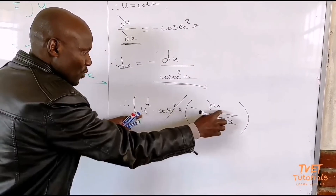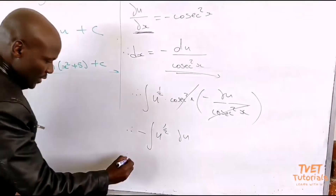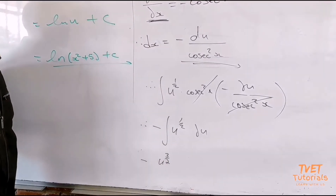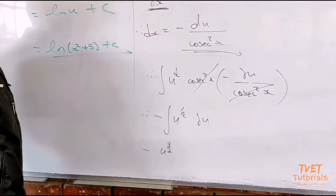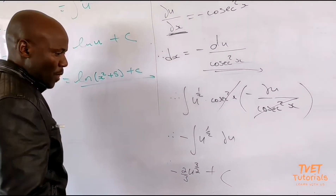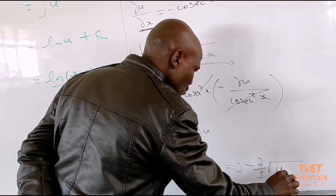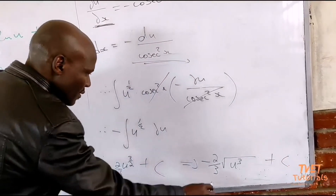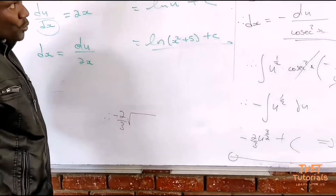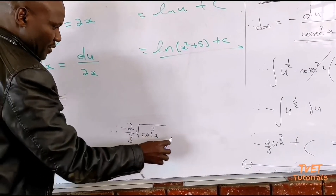Our expression is now simple — entirely in terms of u. Factor out the negative: it's negative ∫u^(1/2) du. Integrate by adding one to the power: u^(3/2). Divide by 3/2, which means multiply by 2/3. So it becomes negative 2/3 · u^(3/2) + c. Substituting back, u = cot x, so the final answer is negative 2/3 · √(cot x)³ + c.